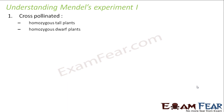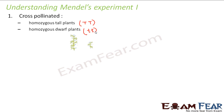Mendel actually performed two sets of experiments. In his first experiment, he took homozygous tall plants — both alleles are the same, so it will be TT (capital T, capital T) — and he also took homozygous dwarf plants, which is tt (small t, small t). Then he cross-pollinated them, and all the plants obtained were tall.